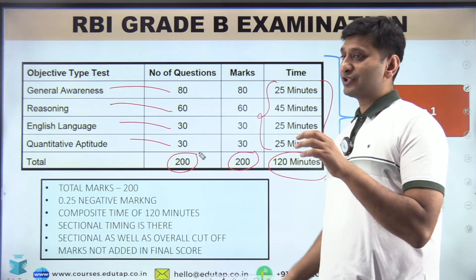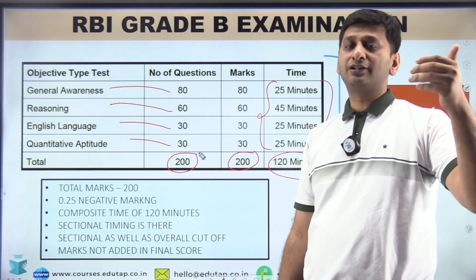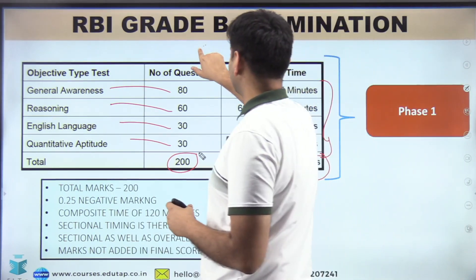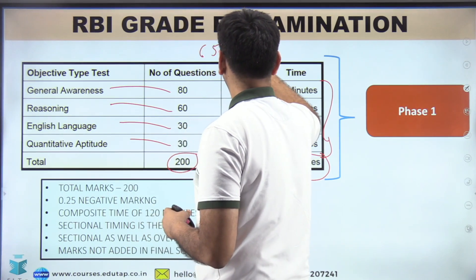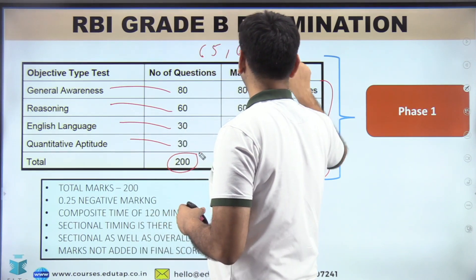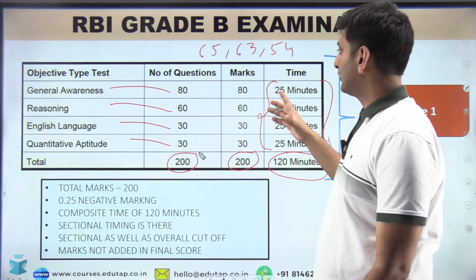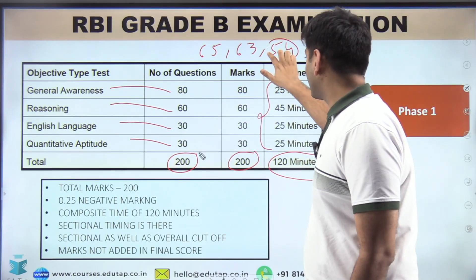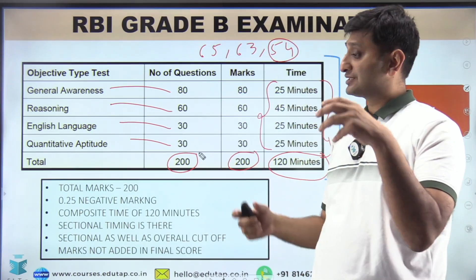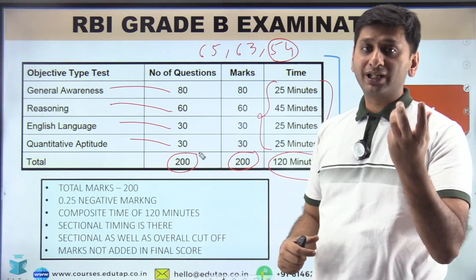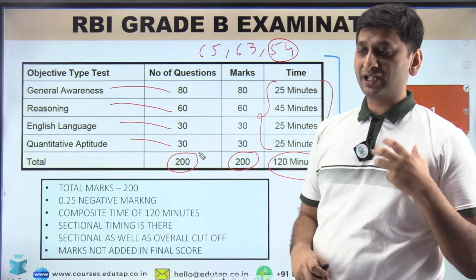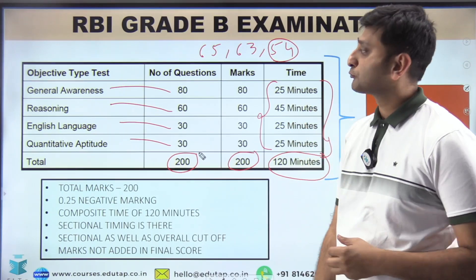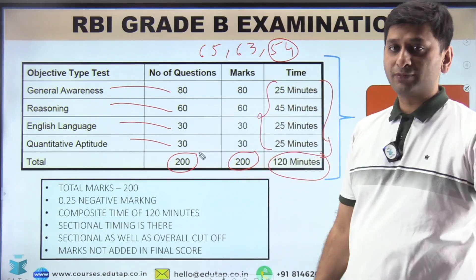Phase one is getting very tough and unpredictable. The last three cutoffs were around 65, 63, and 54 out of 200 — that's roughly 27 percent marks. Cutoffs are going low because the paper level has increased significantly. So do not take phase one lightly even if you are good in quant, reasoning, and English.